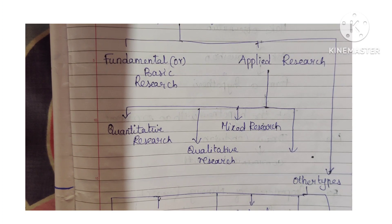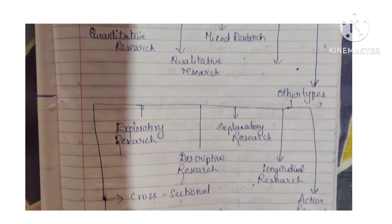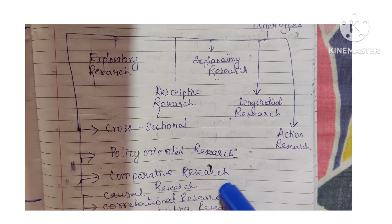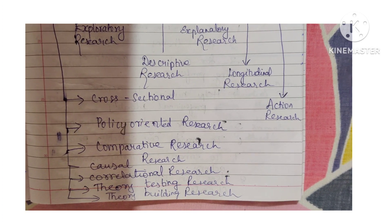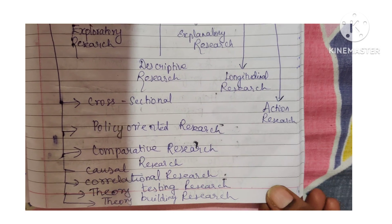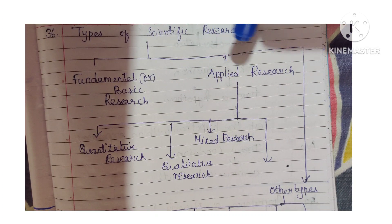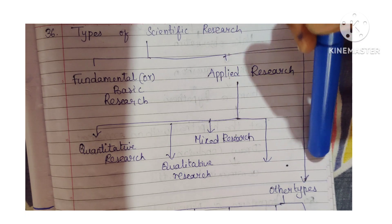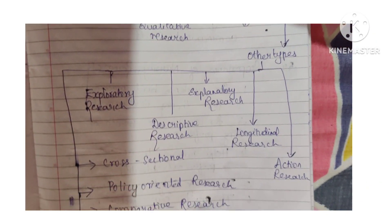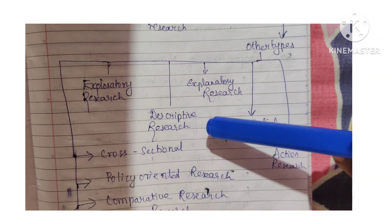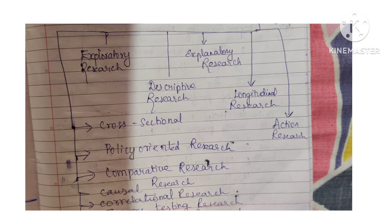Under other types, you have exploratory research, explanatory research, descriptive research, longitudinal research, action research, cross-sectional research, policy oriented research, comparative research, causal research, correlational research, theory testing research, and theory building research. If you write at least 5 to 6 types it will be very useful, but write all if possible.